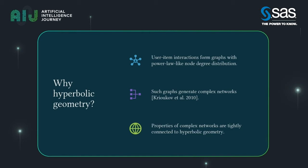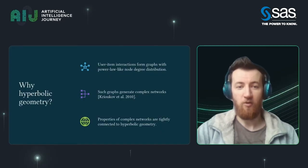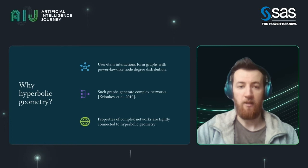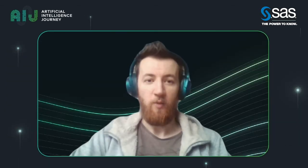This graph will be spread via a power law, or another non-uniform spread along the nodes of the graph. Such graphs generate complex networks — a term that means networks that don't follow uniform spread, that are complex. Krikov's work showed that such complex networks are very well modeled assuming that objects of such networks are found in a space with hyperbolic geometry.